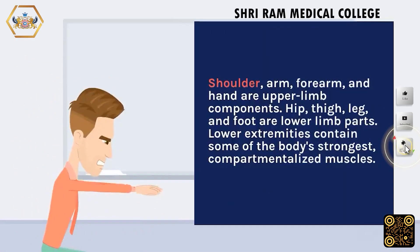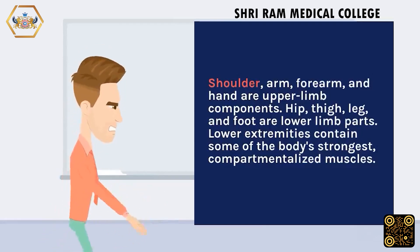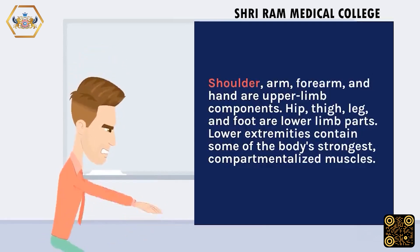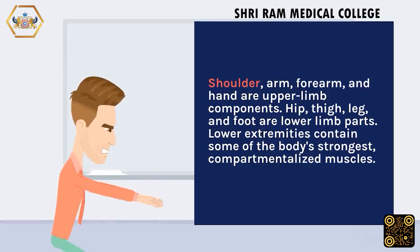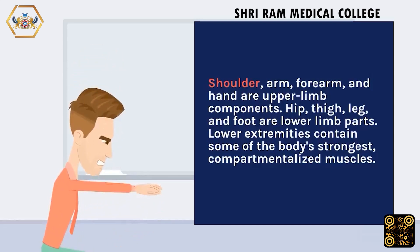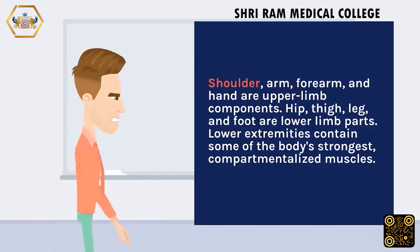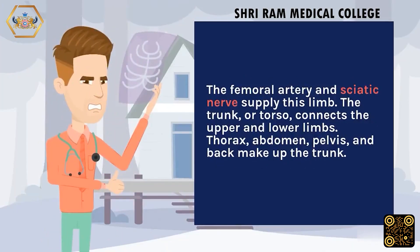Shoulder, arm, forearm, and hand are upper limb components. Hip, thigh, leg, and foot are lower limb parts. Lower extremities contain some of the body's strongest compartmentalized muscles. The femoral artery and sciatic nerve supply this limb.